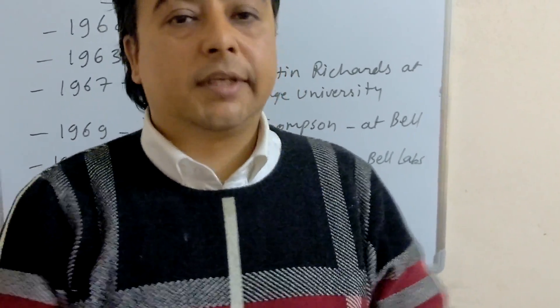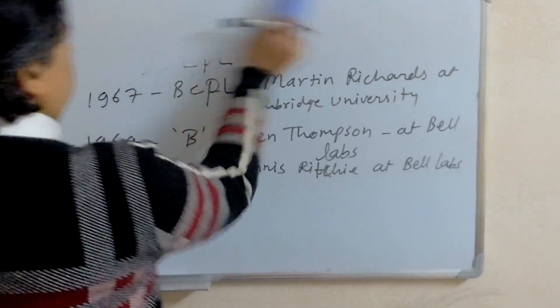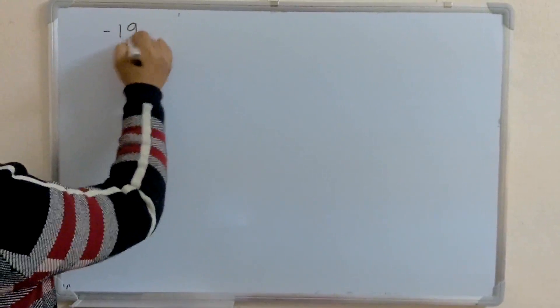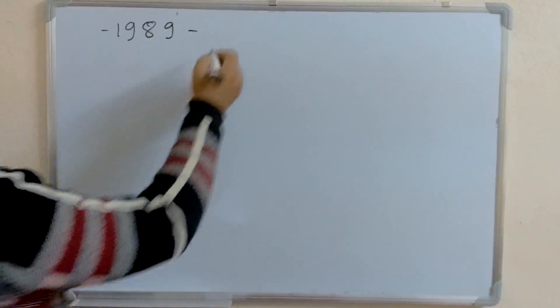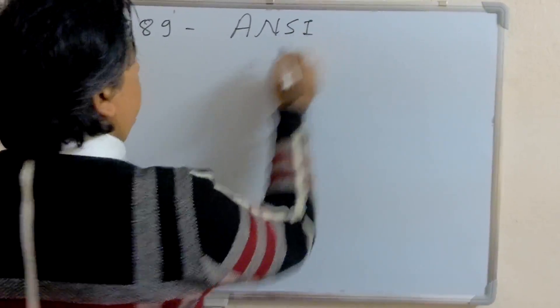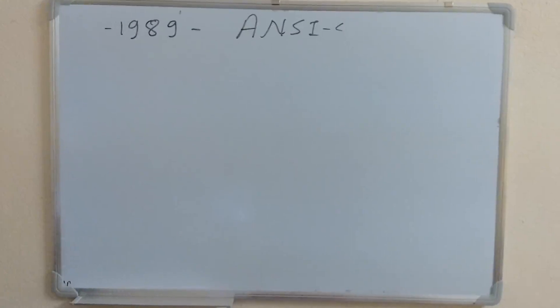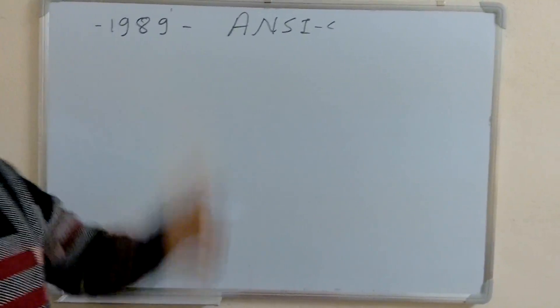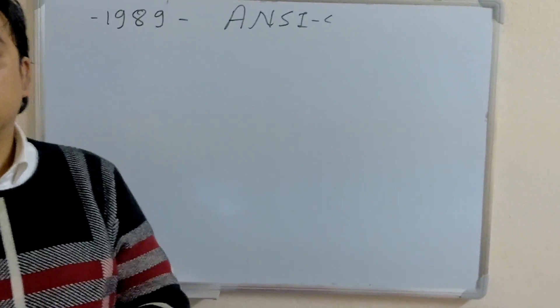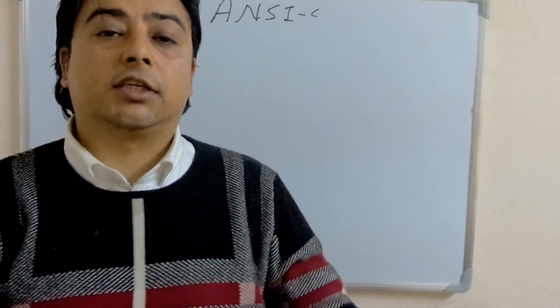Now, let's learn about C standards. In 1989, ANSI, American National Standards Institute, approved the programming language, or provided the first standard C language.